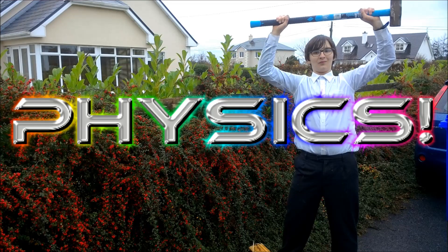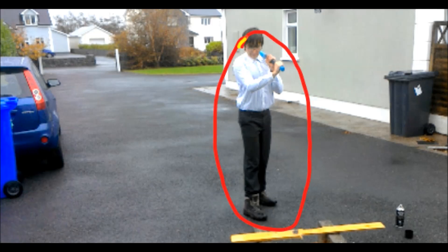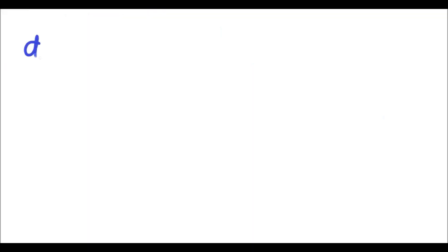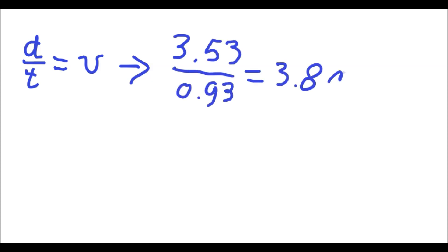Now let's get into the physics behind what just happened. Consider the circumference from my elbow to the top of the hammer, and the arc of the circumference that the hammer travels. The radius of the circle is 90 centimetres and the angle the hammer travels is 255 degrees. This means the hammer travels 353 centimetres. Using distance over time equals velocity, the velocity of the hammer assuming constant acceleration is 3.9 metres per second.